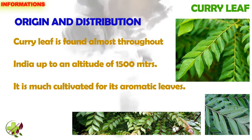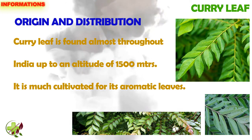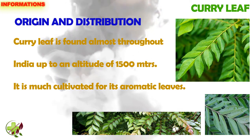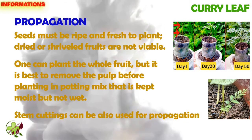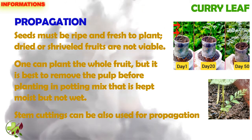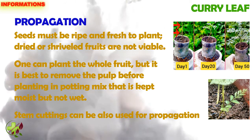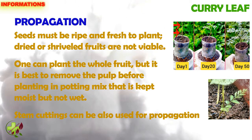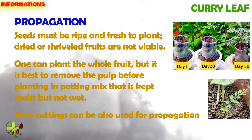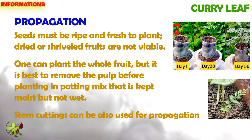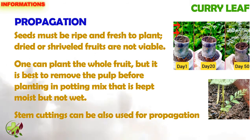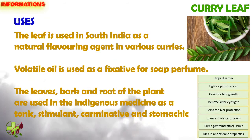Curry leaf is found almost throughout India, up to an altitude of 1500 meters. It is much cultivated for its aromatic leaves. For propagation, seeds must be ripe and fresh to plant — dried or shriveled fruits are not viable. One can plant the whole fruit, but it is best to remove the pulp before planting in a potting mix that is kept moist but not wet.